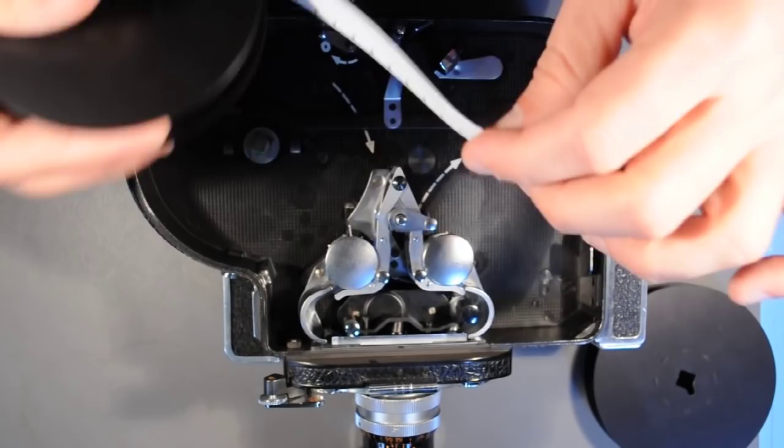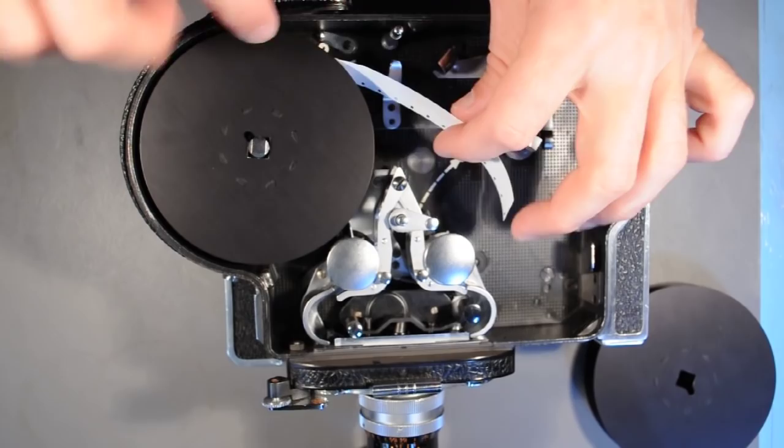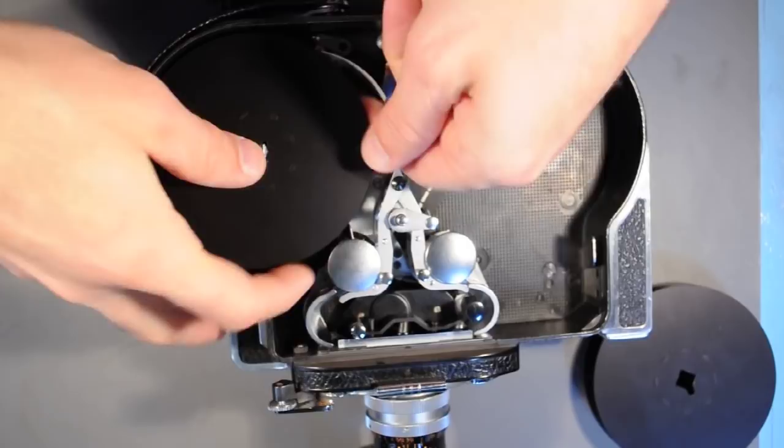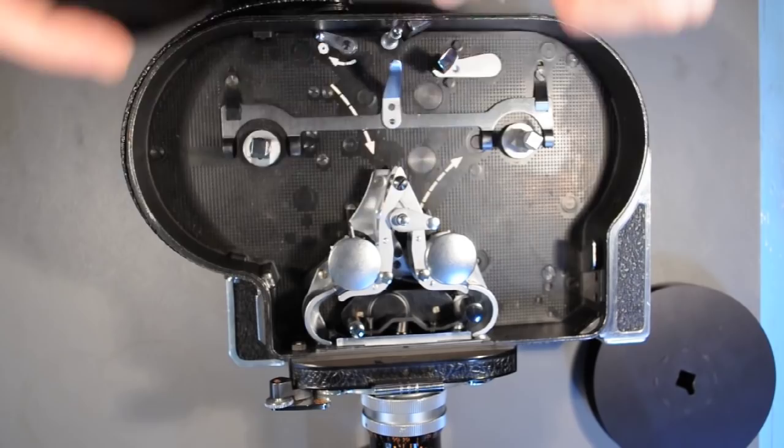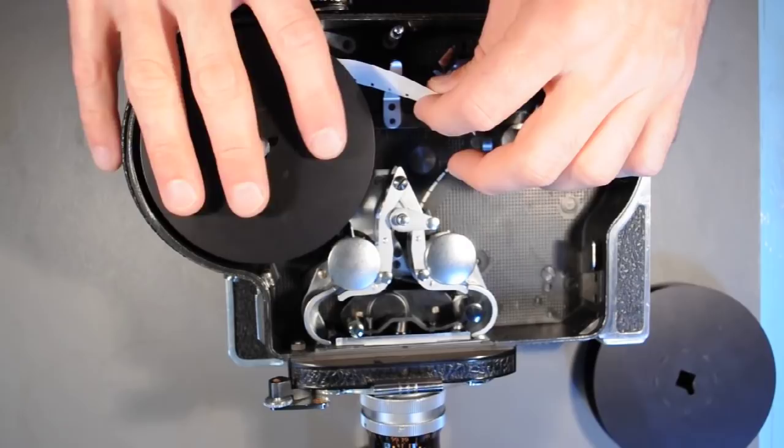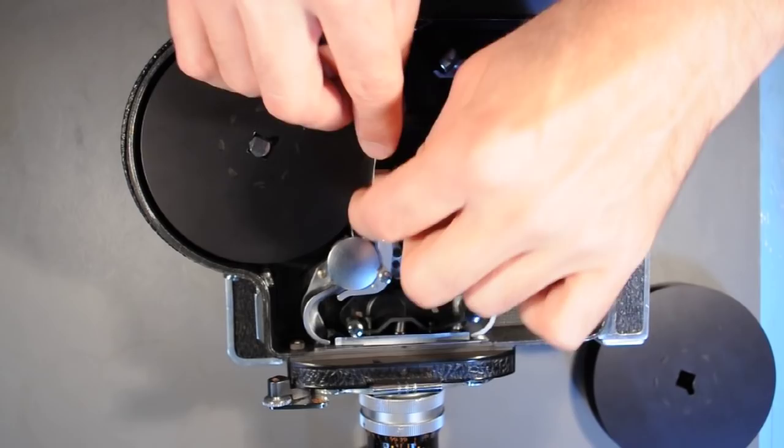Since I'm using leader, I trimmed this already. I'm going to place the daylight spool here. The film is coming this direction—there's an arrow that indicates the direction of the film. You can see this arrow; this is your reminder as to which way the film goes through the camera film path. Click that in place and make sure it's flush and not lopsided or unseated.